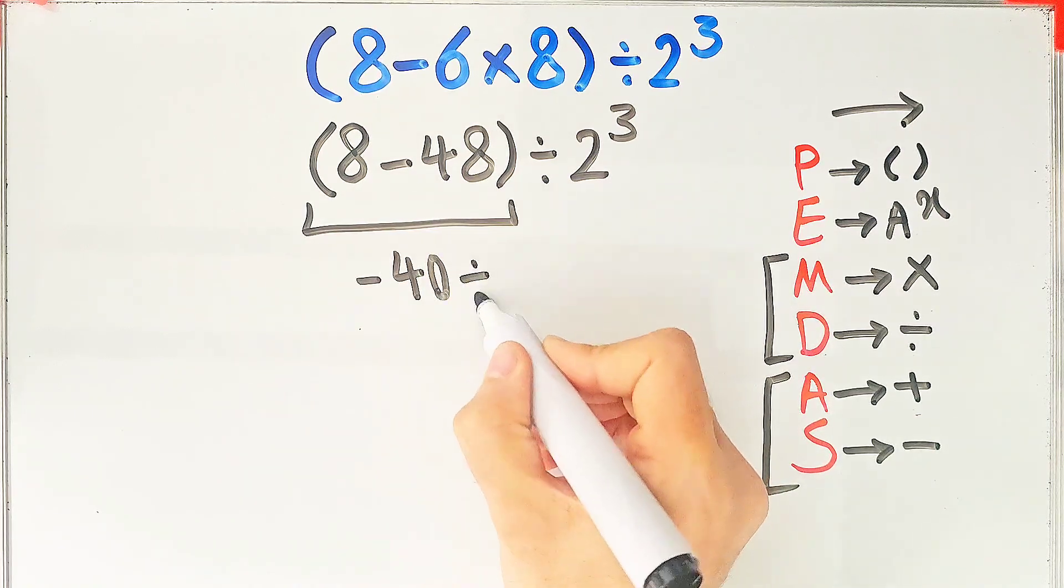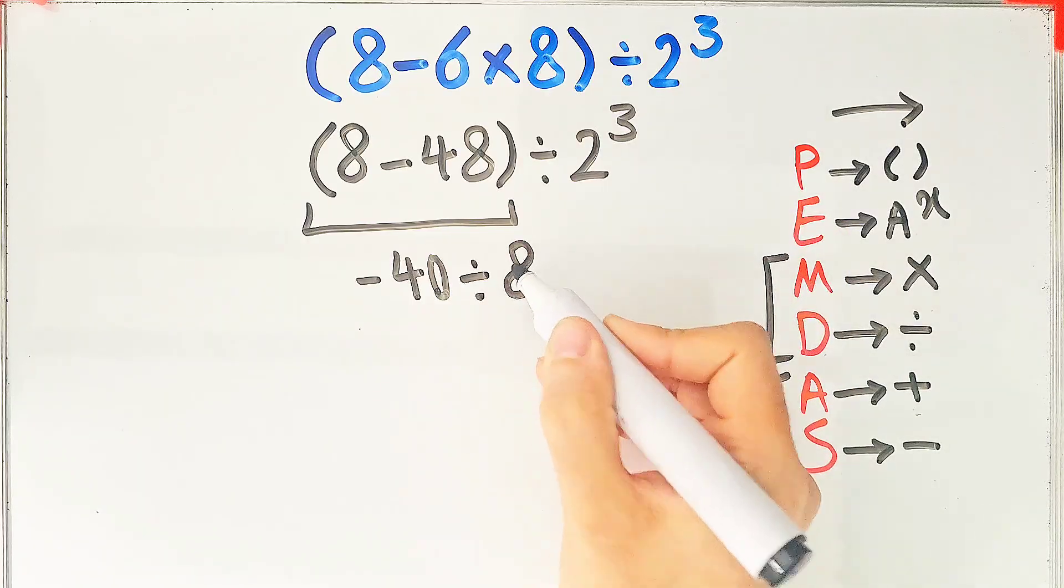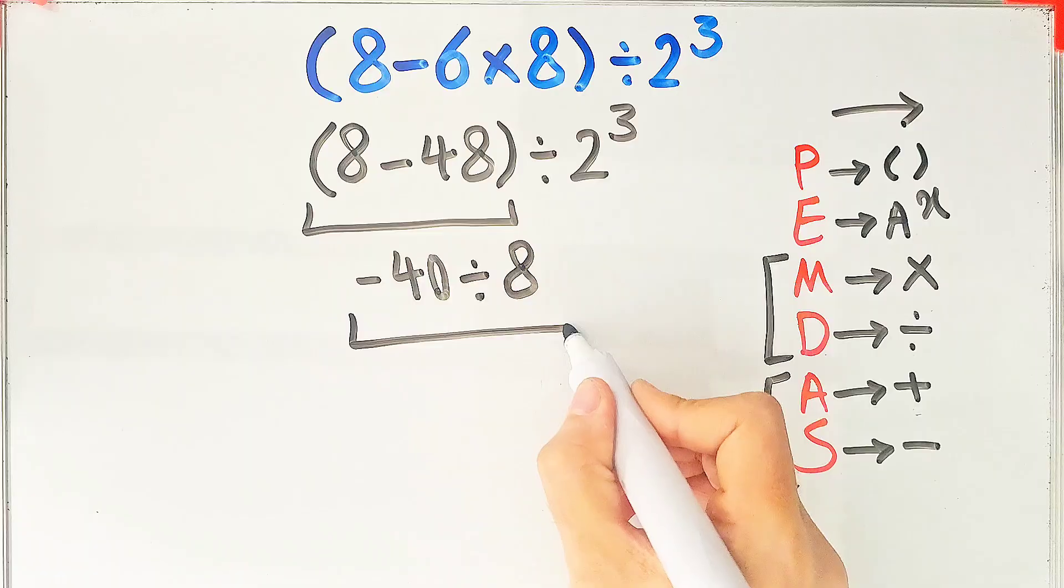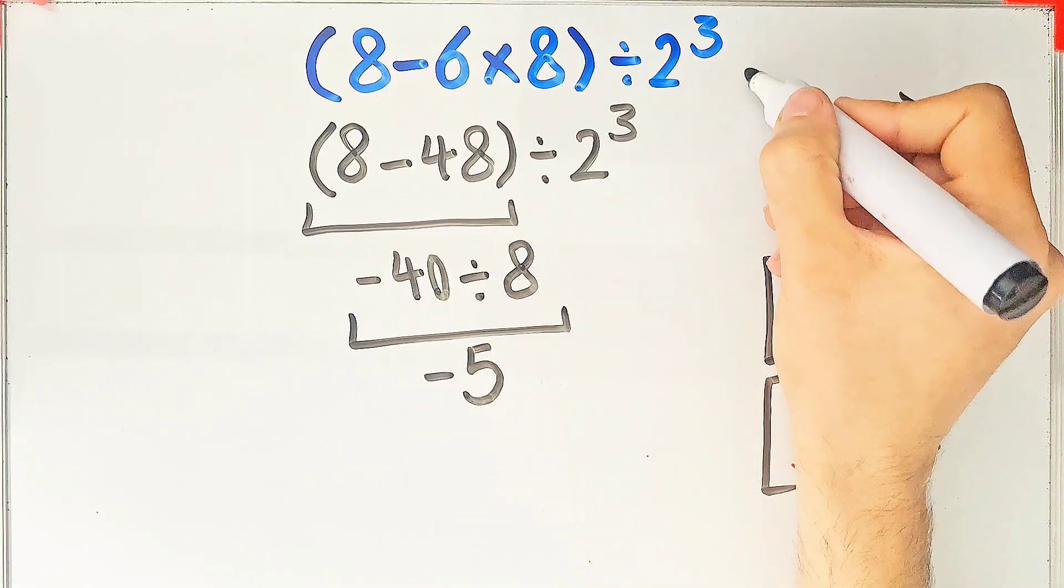Now we have negative 40 divided by 2 to the power of 3, which equals 8. Negative 40 divided by 8 equals negative 5. The final answer of this question equals negative 5.